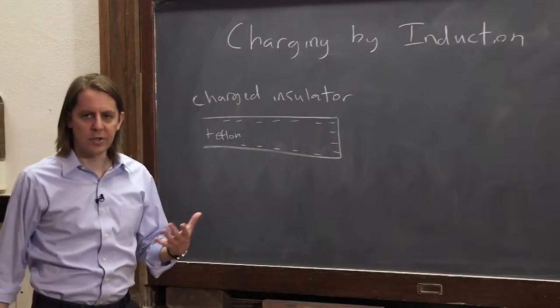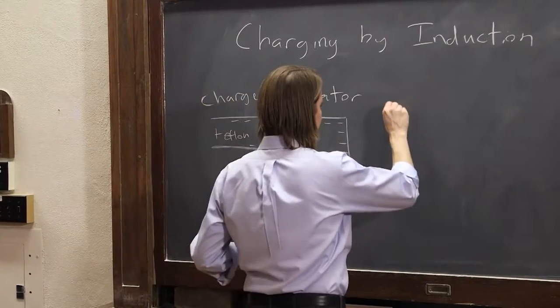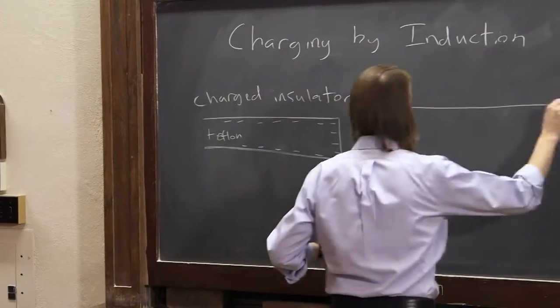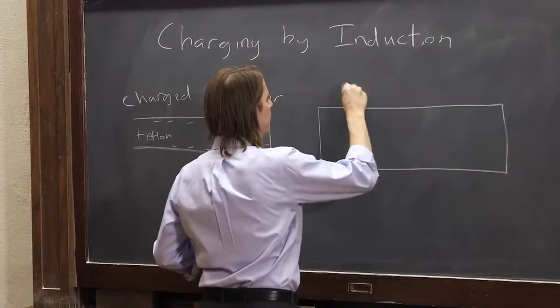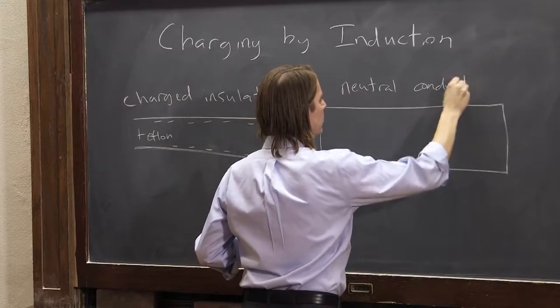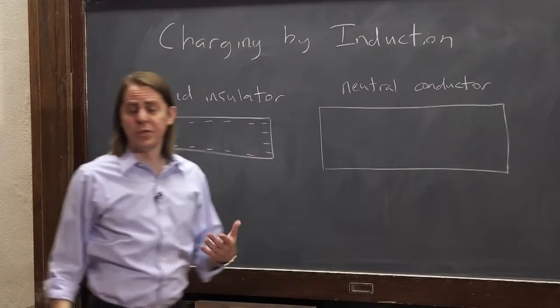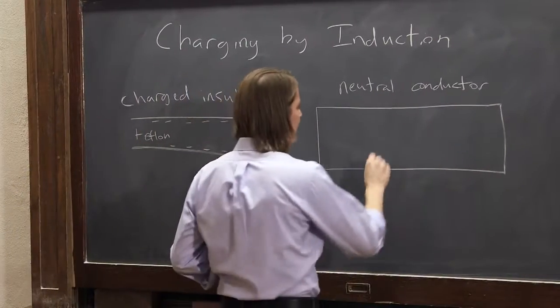So the insulator gives us a way to just hold a charge somewhere. Now the other object that we want to bring nearby is a neutral conductor. And when I talk about a conductor, I almost always talk about a metal. So let's assume this one is a metal.